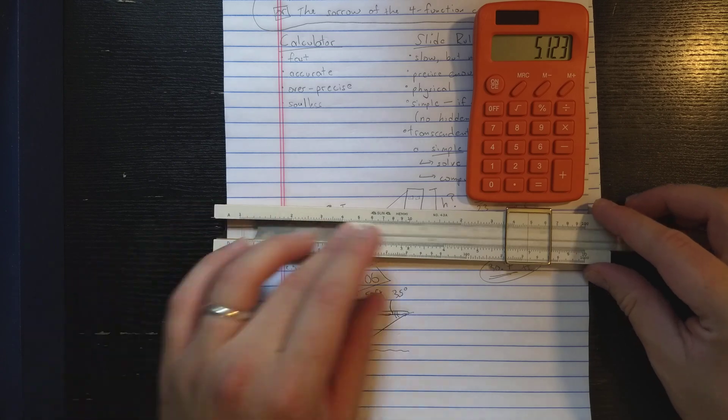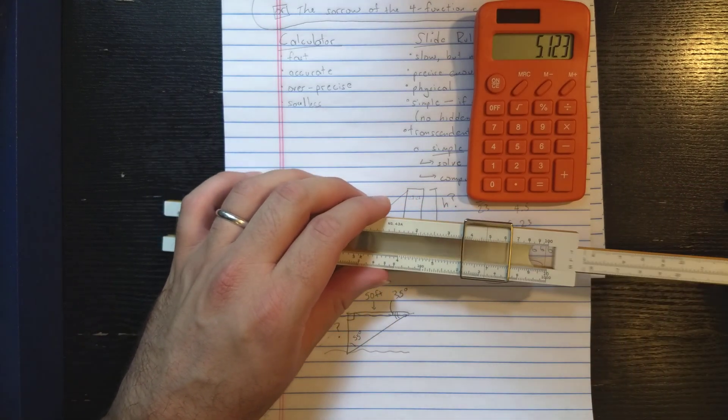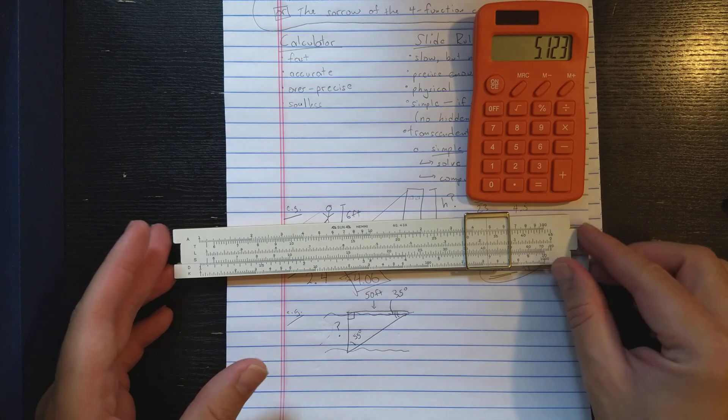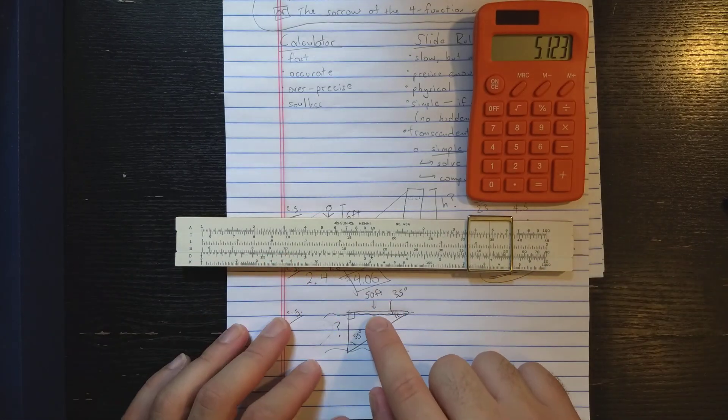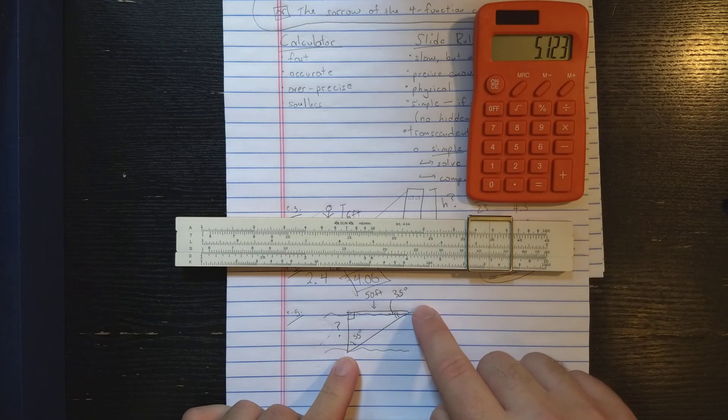This can be solved with these scales on the reverse also. Let me flip the slide for this calculation. So what I need to do is kind of set up a proportion. And the proportion uses the law of sines.